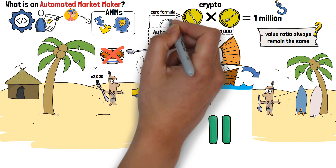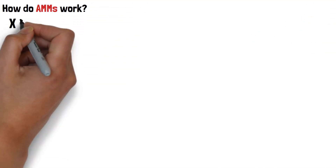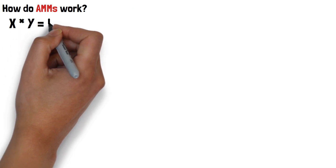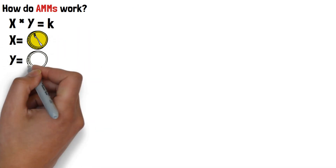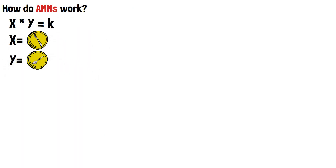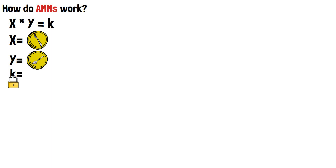What you've just witnessed is the core formula behind the automated market-making algorithm — the essential rule that allows AMMs to function properly. Written as a formula, it looks like this: x times y equals k. Here, x is the forks, y is the spoons, and k stands for the result of the multiplication — a number that must always remain the same in this equation, no matter what. In our example, k is 1 million.